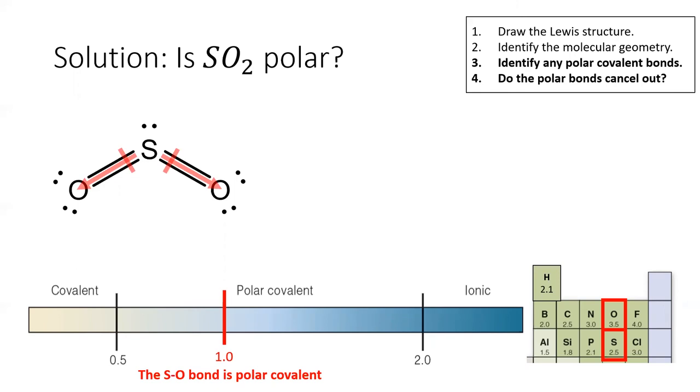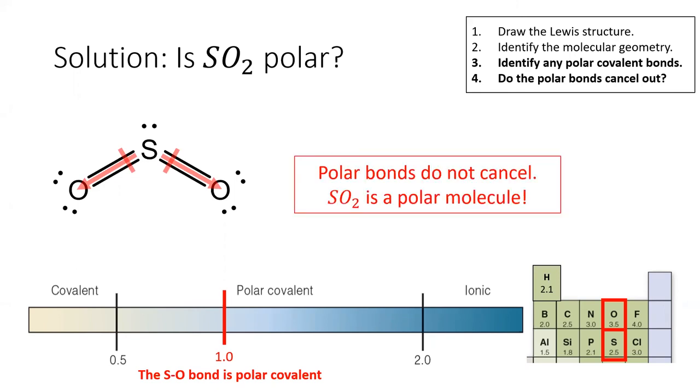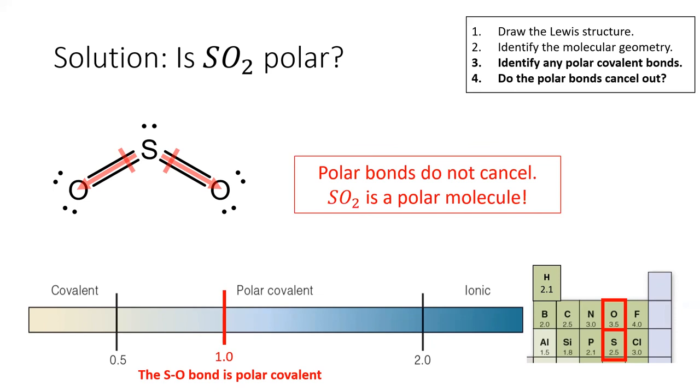We'll indicate that both of these bonds are polar by drawing some bond dipoles. These bonds do not cancel out, so SO2 is a polar molecule. To find the net dipole, we need to use vector addition. Some people find it helpful to think of two tractors pulling on a stump when they think of vector addition. Even if one tractor is going forward and to the left, while the other tractor is going forward and to the right, the stump will feel a net pull in the forward direction.